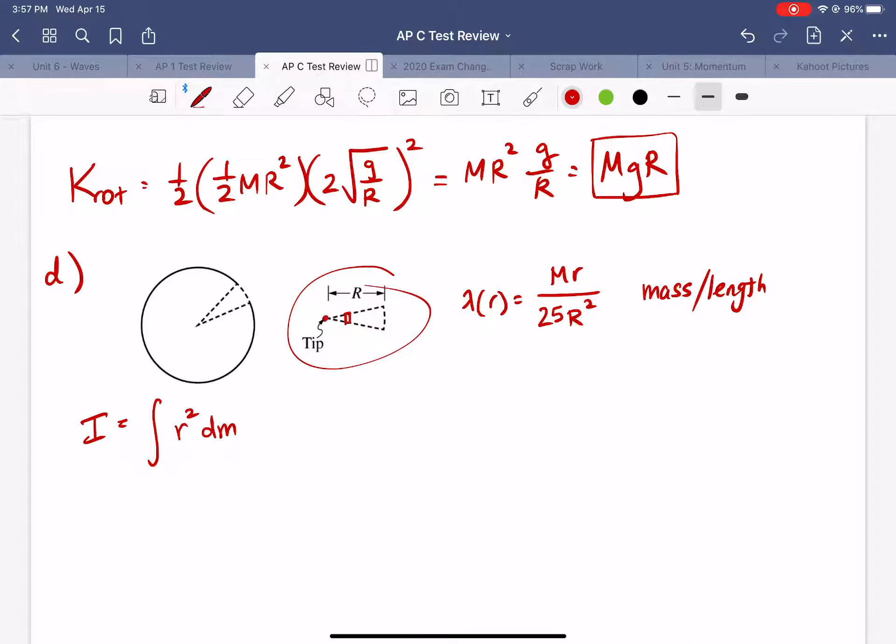So for this wedge we're going to imagine it rotating around this tip. So r will be the distance that we measure in this direction. Okay so we need to figure out how to find the mass of a tiny slice of this wedge and that is where this equation here is going to come in. This tells us the mass per unit length of a particular slice of this wedge.